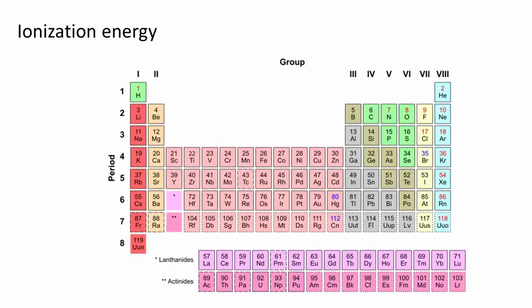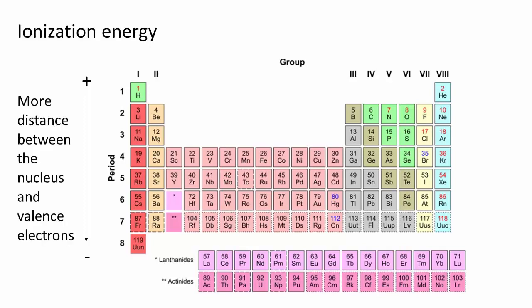Another periodic property is the ionization energy, the energy required to remove an electron. As we go down a group, the ionization energy decreases. The effective charge remains the same, but the valence electrons are further away from the nucleus and more easily removed.